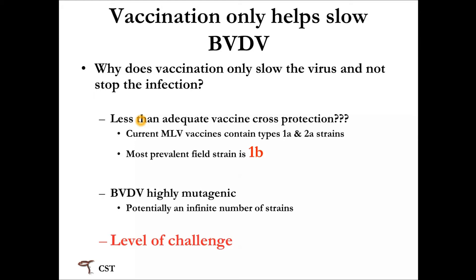Vaccination only helps slow BVD virus, and we need to discuss this. Most producers vaccinate their herds for BVD, but studies show that vaccines will not completely prevent it — they only help reduce the chance of having an issue. It's my opinion that we have less than adequate vaccine cross-protection. Currently, the modified live vaccines we have contain type 1a and 2a. Through our research, we found that the most common strain in PI animals in the field is type 1b. So we do not have the correct strain in our vaccines to immunize against the most common subtype we see in the field. Additionally, because BVD is highly mutagenic and always changing, the virus is always moving away from the strains used in our vaccines.